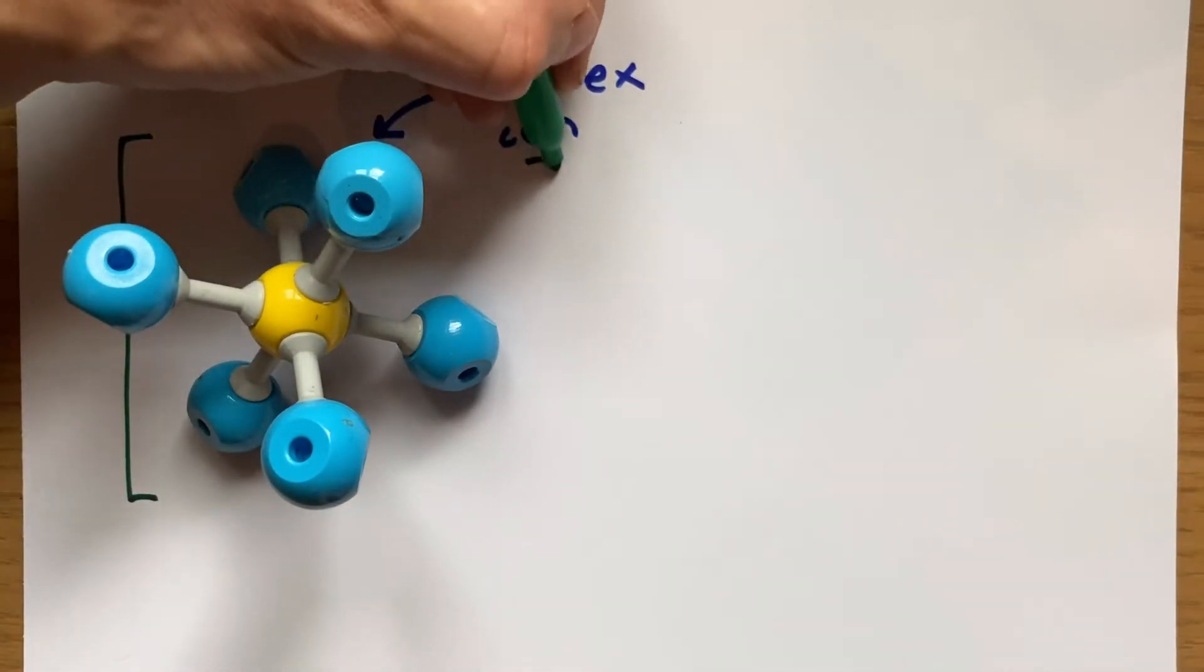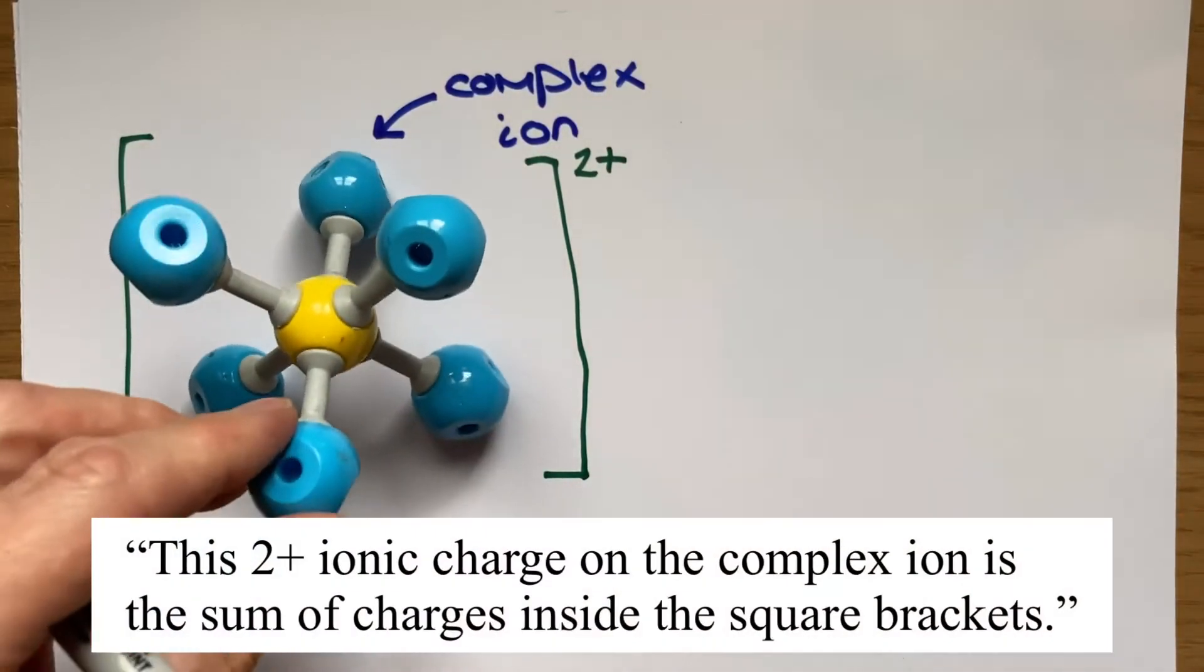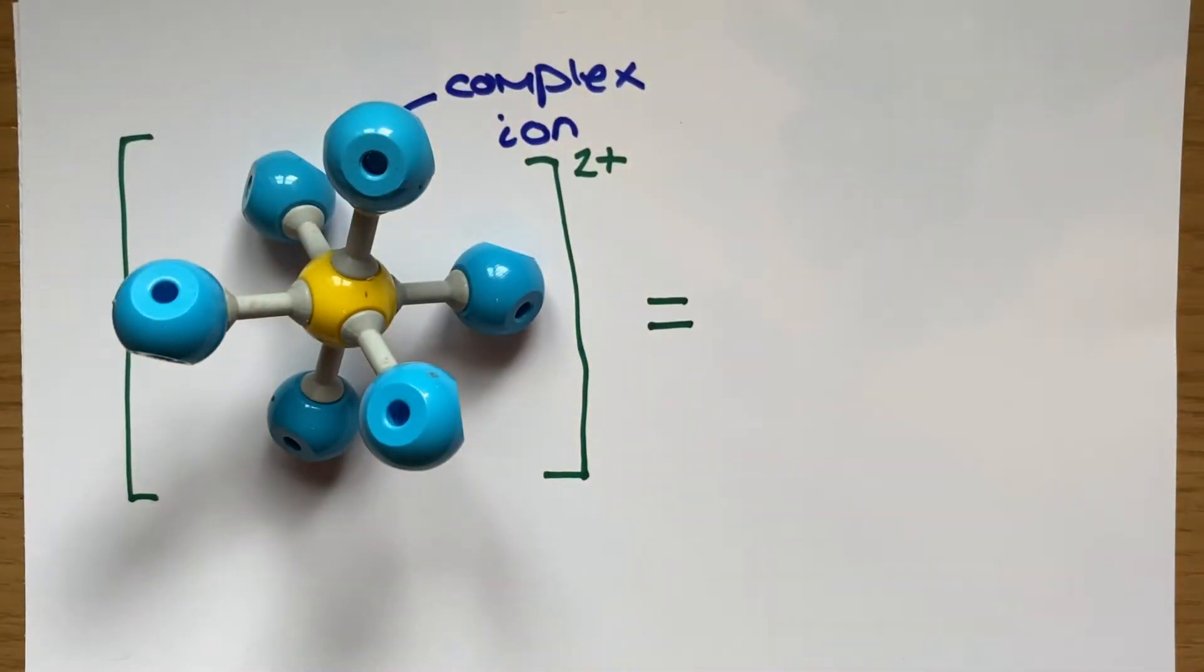Here you can see I'm very gracefully adding square brackets to the surrounding of my structure. This is quite common as what we show on the outside of the square brackets is an ionic charge in our complex ion.